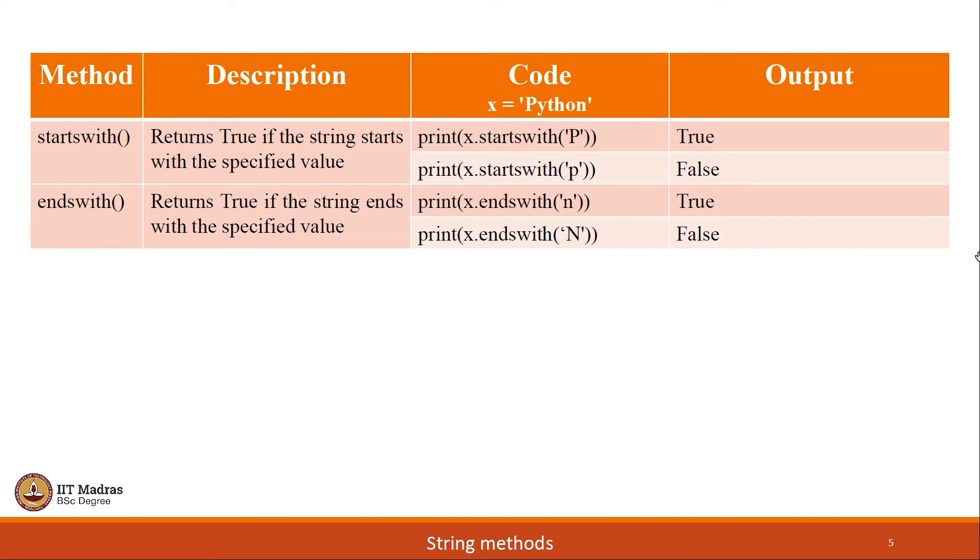Next set of string methods are startswith and endswith. As the method name suggests, it returns true if the string starts with the specified value or it returns true if the string ends with the specific value in case of endswith. The value for variable x is python with capital P. And if you observe the output of startswith capital P and then startswith small p, then you will observe that this particular method is case sensitive. As in, if we give input which is a specific letter which matches not just the letter, the case as well, then only we get it as true.